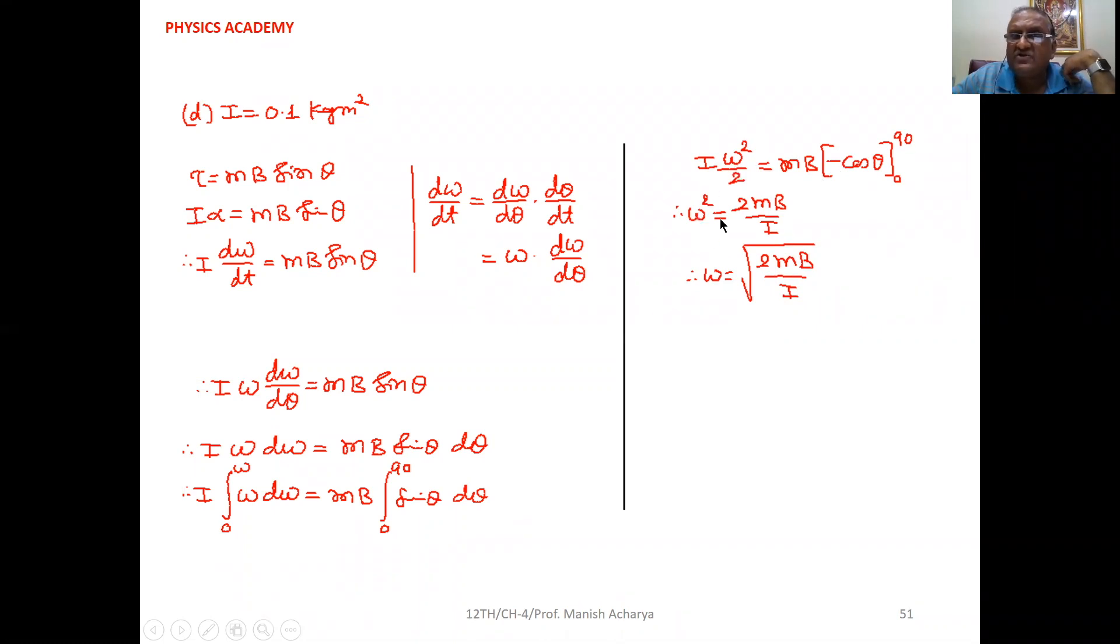So finally we will get ω² = 2MB/I. So ω = √(2MB/I).